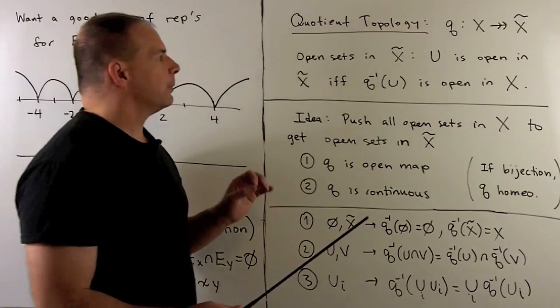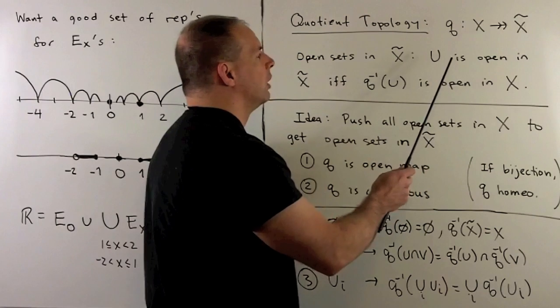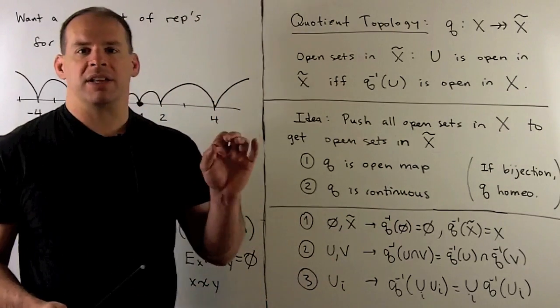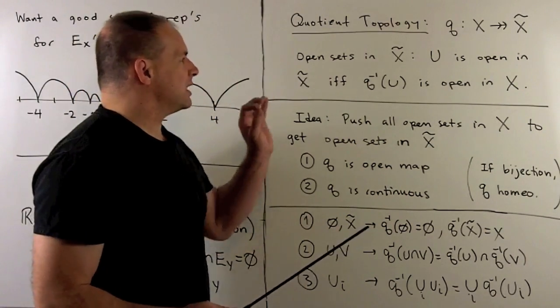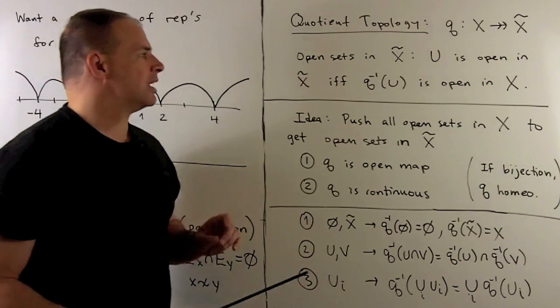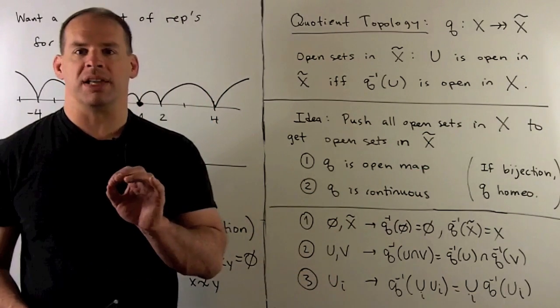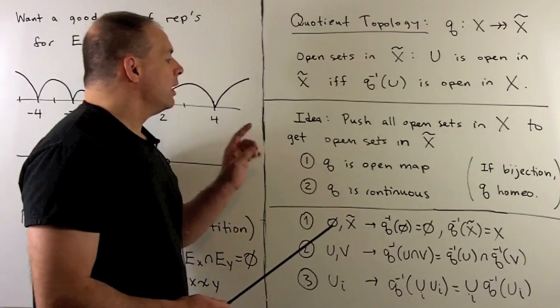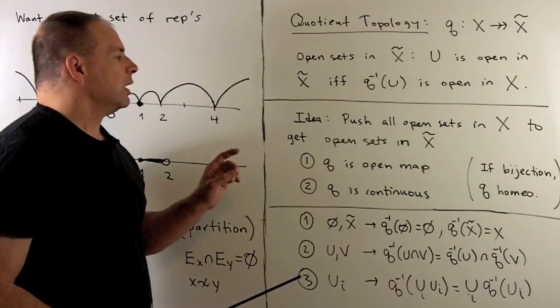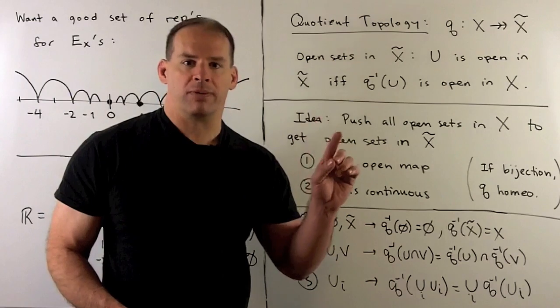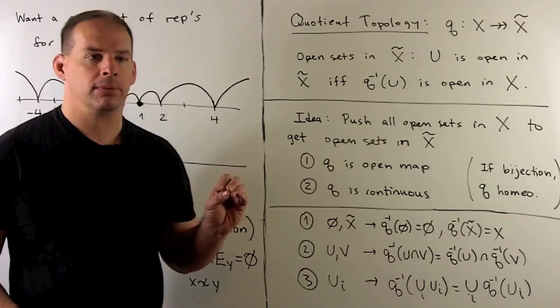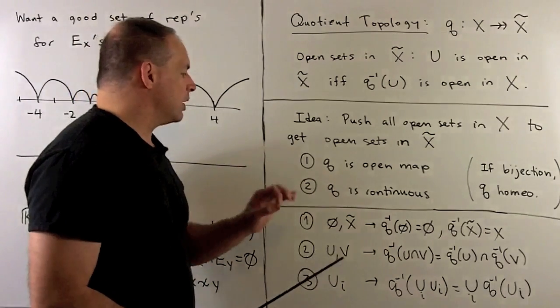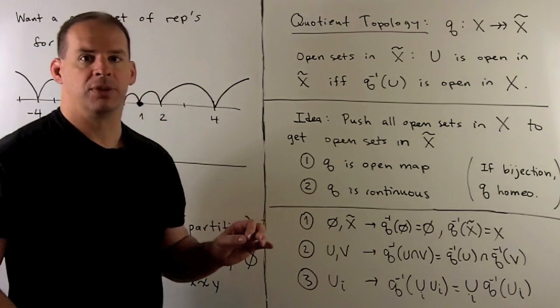For the quotient topology, we're going to assume x has a topology on it. We're going to have a surjective map carrying x to x tilde called q. Then we're going to define open sets in x tilde for the quotient topology by saying that u is open in x tilde if and only if q inverse of u is open in x. The idea is we're just going to take all the open sets in x, push them over to x tilde using q, and define our topology that way. Note, this makes q continuous and an open map. If q was a bijection, it would be a homeomorphism. This is what happens when we pull the bijection property. You should check that's a topology - that's just an exercise in showing that inverse images are compatible with intersections and unions.